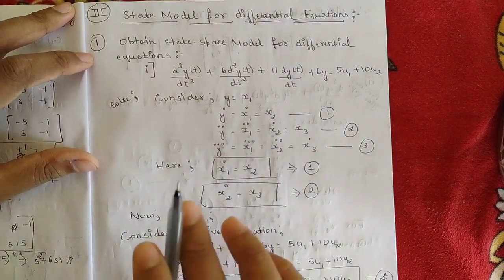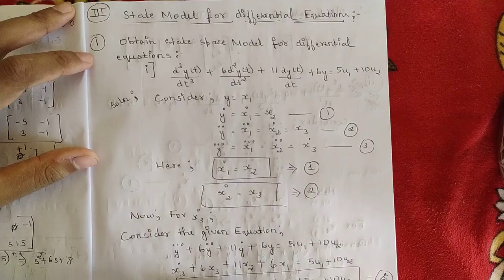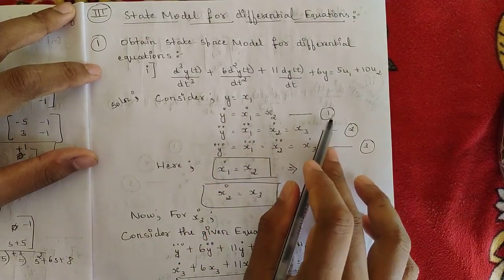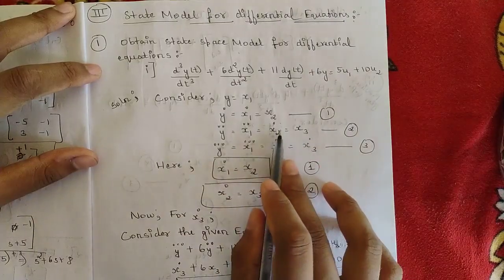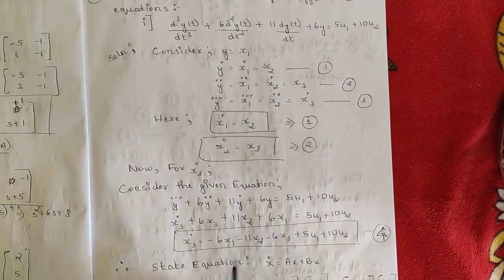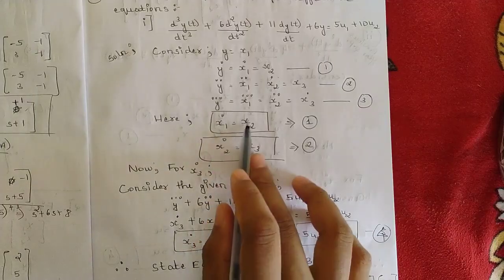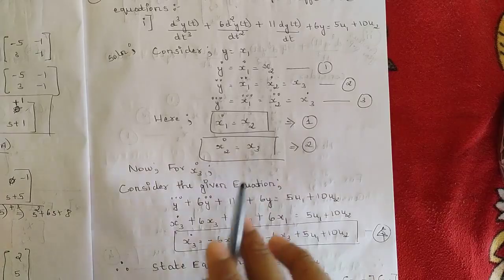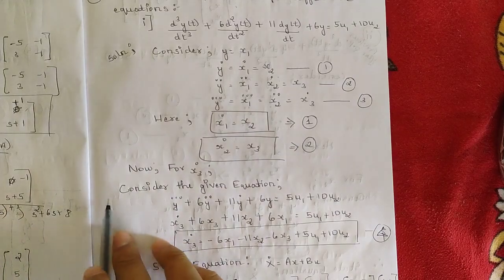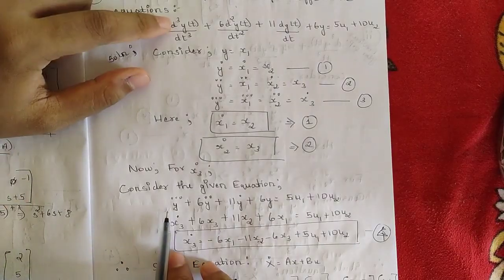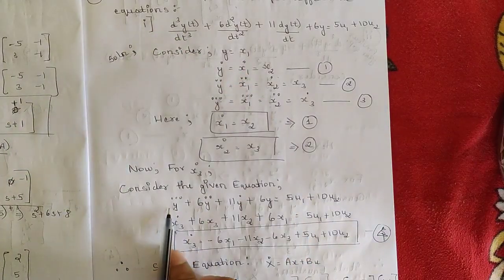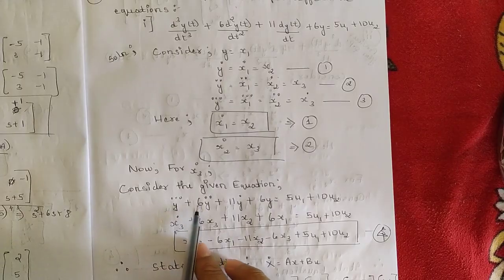Comparing these three equations, we get: x₁_dot = x₂ (from equation 1), and x₂_dot = x₃ (from equation 2). So for the A matrix, x₁ and x₂ are already defined. Now for x₃_dot, take the given differential equation and replace all derivatives with the state variables we have defined — replace d³y/dt³ with y_triple_dot, the second-order term with 6y_double_dot, and so on.